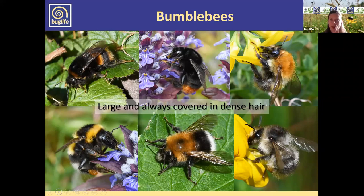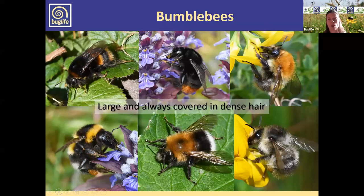As mentioned, bumblebees have pollen baskets — that flat, shiny area surrounded by hairs on the hind leg of females — where they collect pollen. The honeybee example demonstrates that quite well. We've got 24 species in the UK; 18 of these are what we call social bumblebees, living in a colony made up of a queen and her worker daughters.